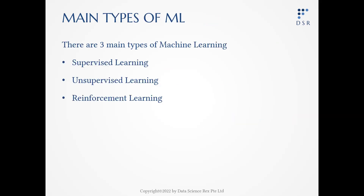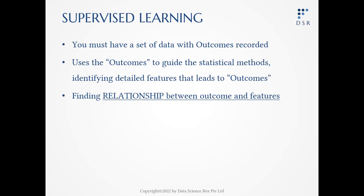There are three main types of machine learning: supervised learning, unsupervised learning, and reinforcement learning. For supervised learning, you need to have a dataset with features of the entity recorded and the final outcomes. The recorded outcomes will guide the statistical methods to identify detailed features that will lead to the outcome. This means that supervised learning is about finding the relationship between features and outcomes.